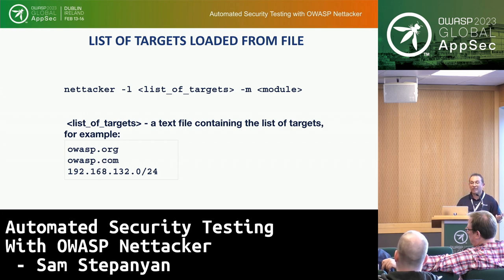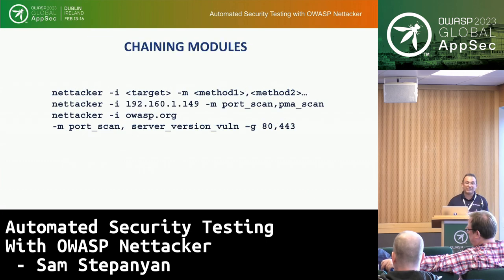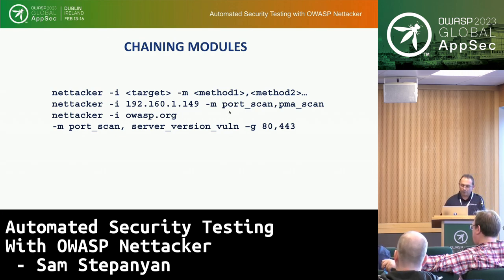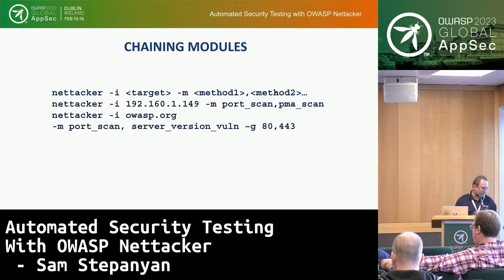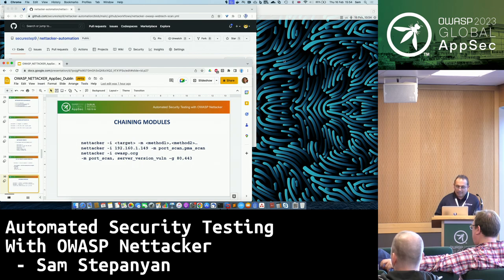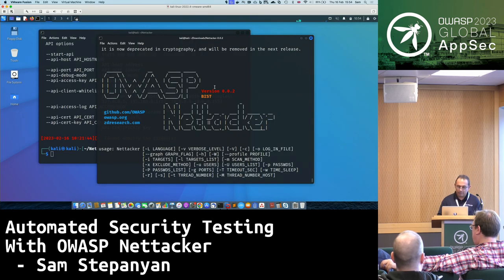Today I will show scanning from outside the network using GitHub Actions to help you understand how to automate it. Another cool thing is that you can chain several modules together by separating module names with a comma — it will run all of them. So if you want to do a port scan and then an X-Powered-By vulnerability scan, you can just combine them. Let me now go to my Kali Linux VM.